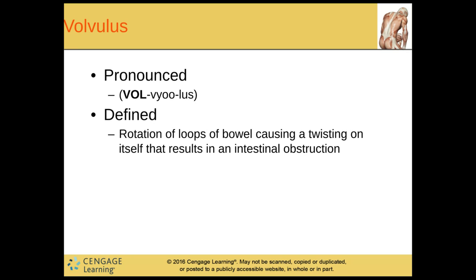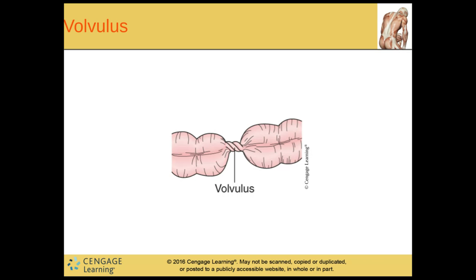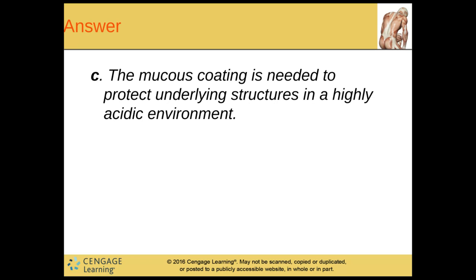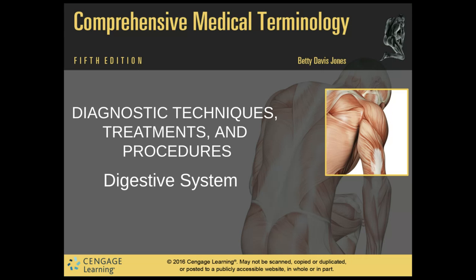And then we have volvulus. This is a rotation of the loops of the bowel causing a twisting on itself that results in an intestinal obstruction. It's almost like twisting a long party balloon — it causes an obstruction from one side to the other. Question: peptic ulcers and ulcerative colitis are a break in what lining? The mucous lining — the mucus coating is needed to protect underlying structures in a highly acidic environment. All right, look for part three soon.